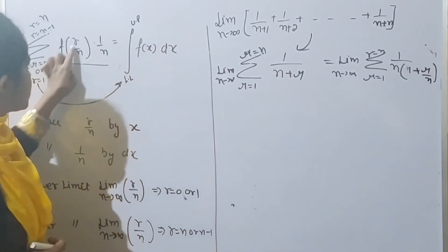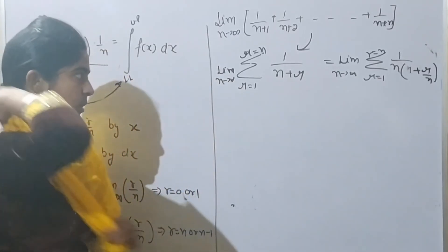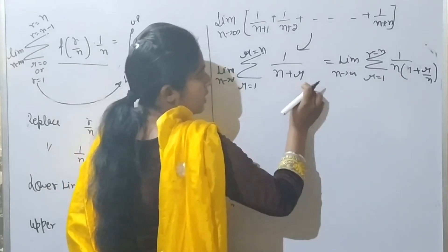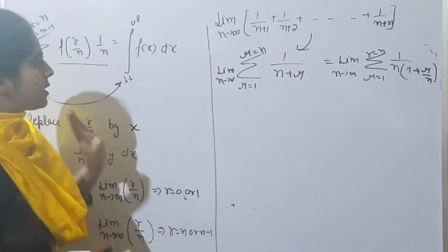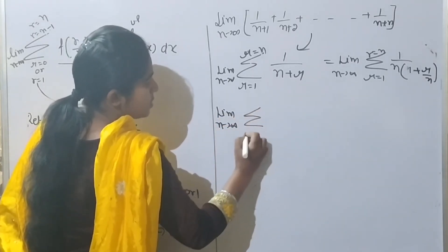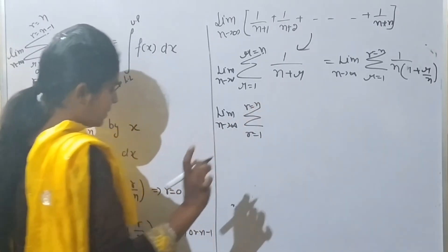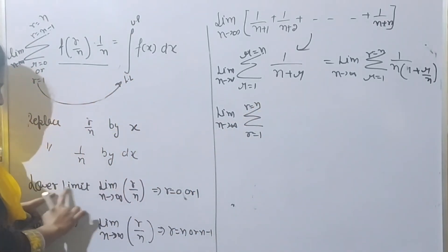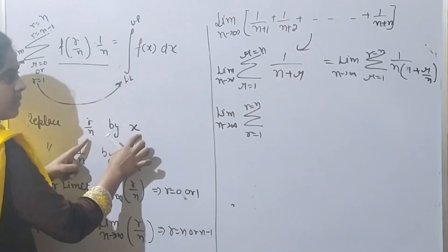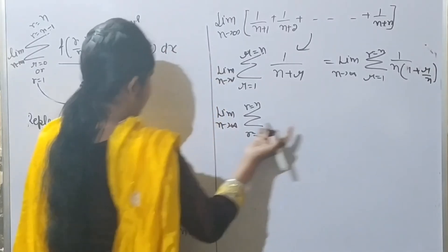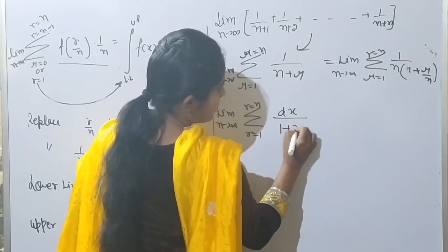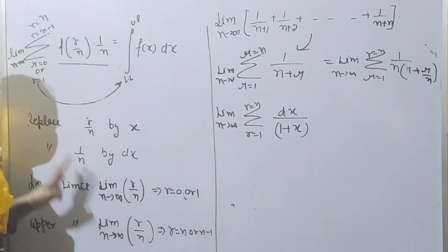Look at the function. The function is r by n, then I'll write 1 by n. So I have to take n common. Then r by n remains. The limit is n tends to infinity, summation r=1 to n. Now let me determine the lower limit. Where I replace r by n, I write x. Where 1 by n appears, I write dx. So I write dx over (1+x). This is pretty easy.